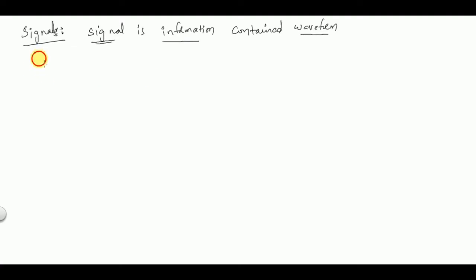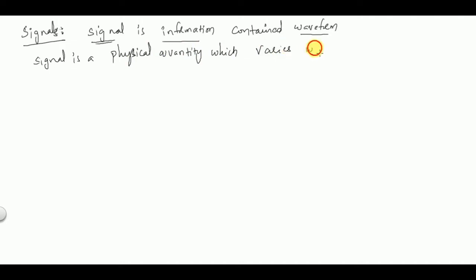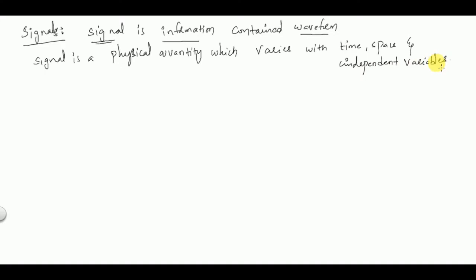A signal is a physical quantity which varies with time, space, and independent variables. So a signal is a physical quantity which varies with time, space, and independent variables.